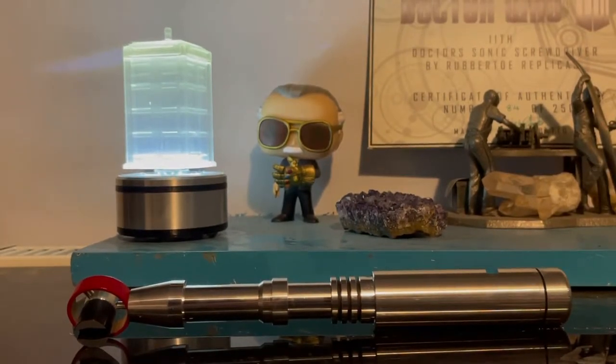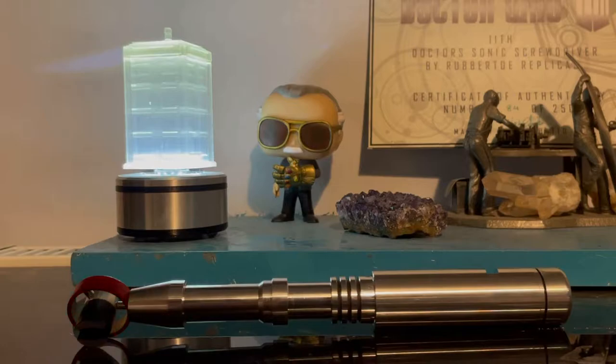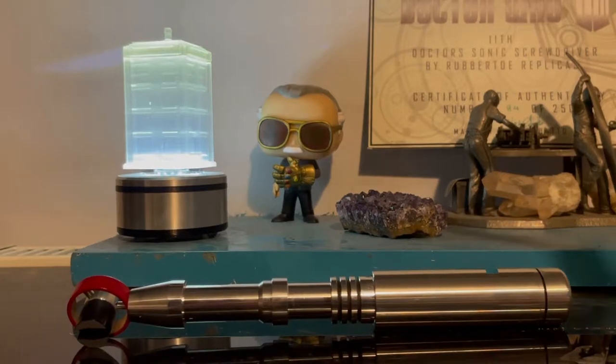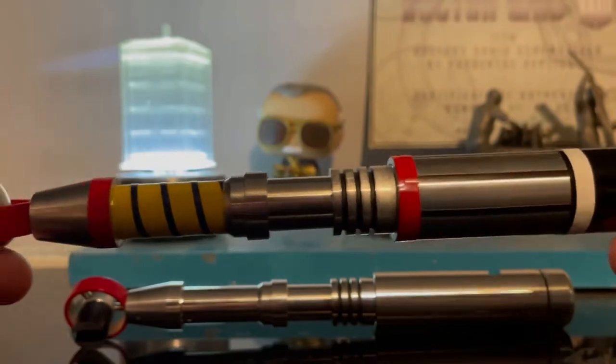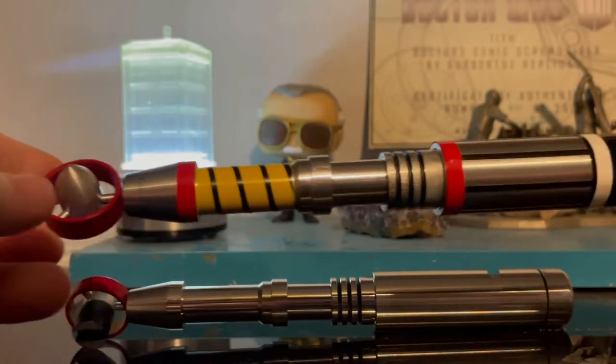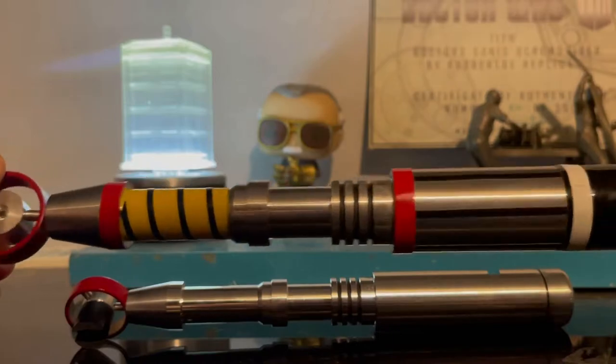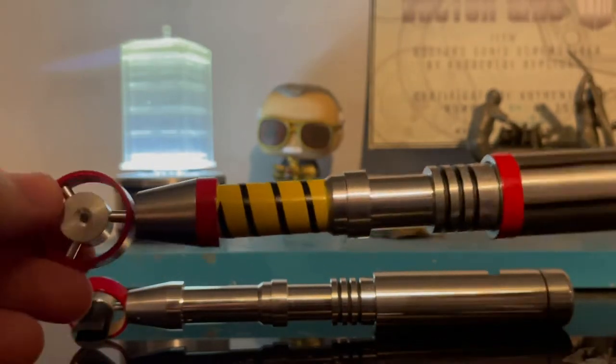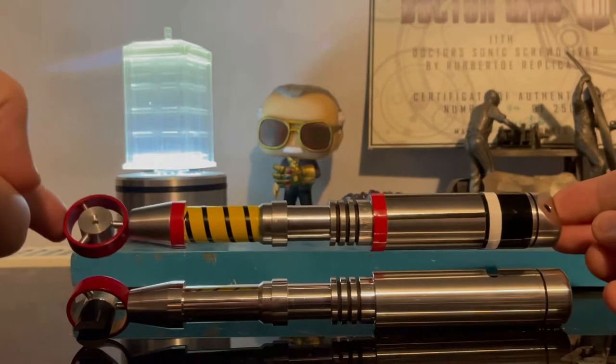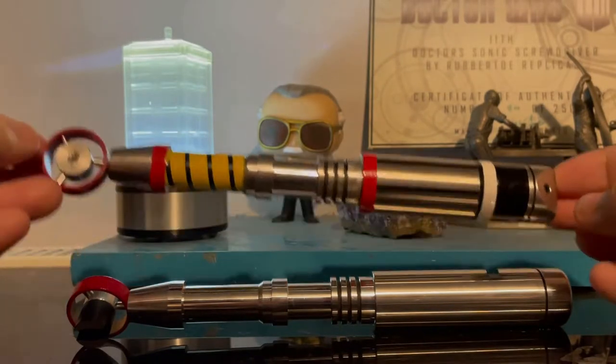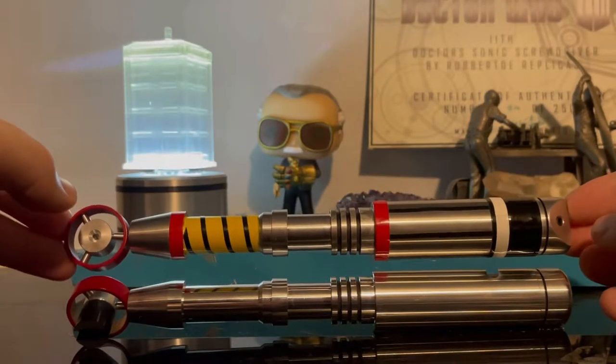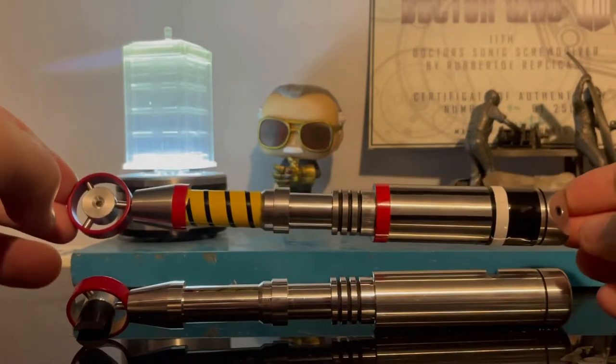So I think really the obvious comparison here that needs to be talked about is its predecessor which is of course the Pertwee 1. Now everybody knows I have that because it's on my channel. If you want to look at that review, all of my sonic reviews will be in the link description below. But yeah, here is the Pertwee 1. As you can see all the stuff on there on the handle. If I put that above the Pertwee 2 there, you can see the body, the silver bits at least are pretty much the same.